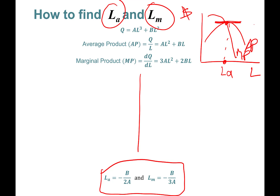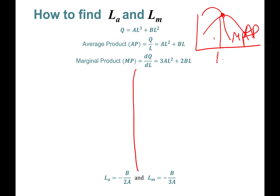What we're going to do is utilize this knowledge: the slope at the top point — the maximum point of average product — is going to be equal to 0. So we're trying to find this LA point. This is a curve, the average product curve, and this is the maximum point of it. We're going to utilize the rule about the slope of a curve.